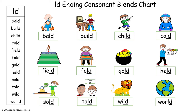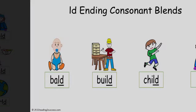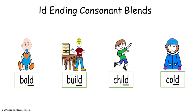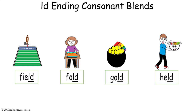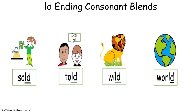Now, referring to the LD ending consonant blends chart, read each row of words with kids: bald, build, child, cold, filled, fold, gold, held, sold, told, wild, world.